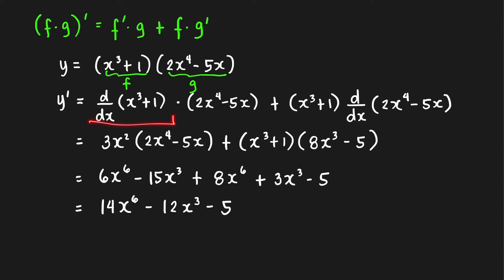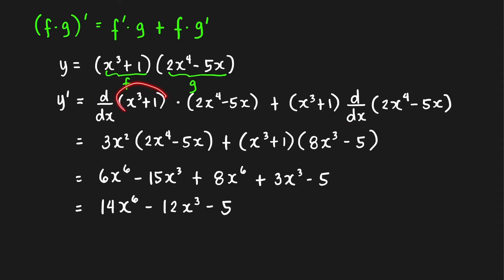First, take the derivative of the first factor and multiply it with the second factor, then copy the first factor and multiply it with the derivative of the second factor. The derivative of (x³ + 1) is just 3x².